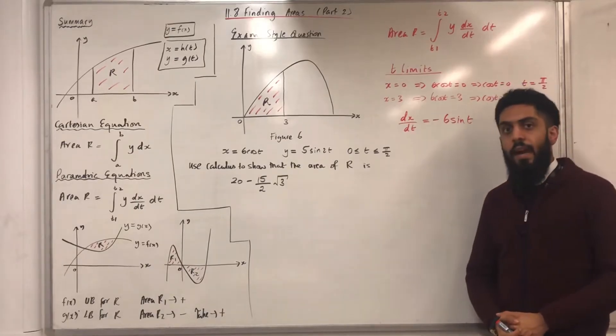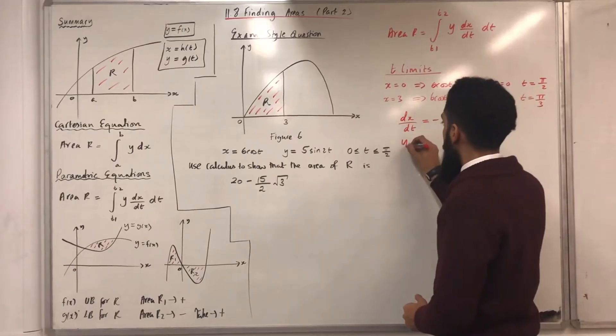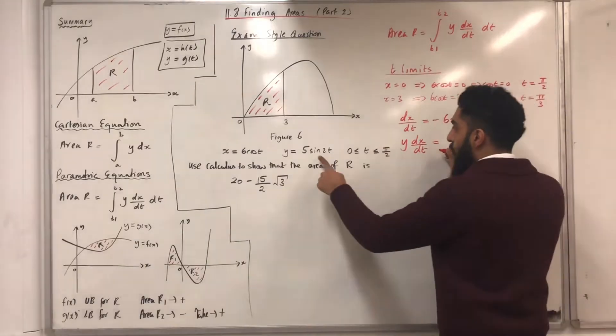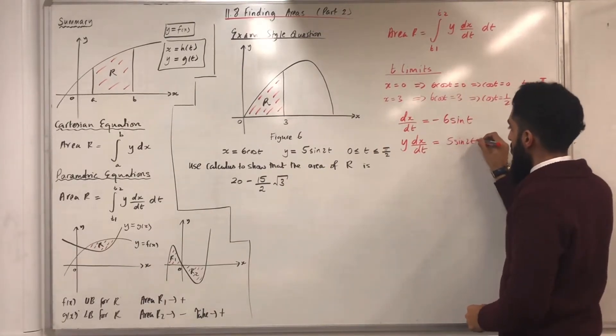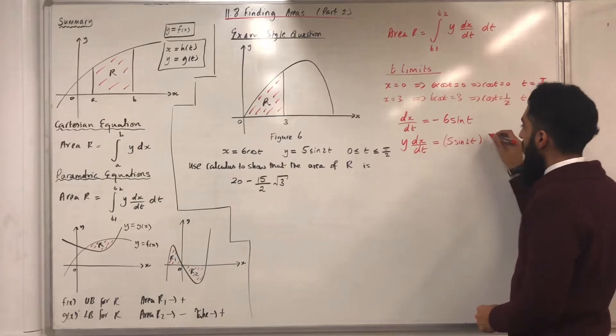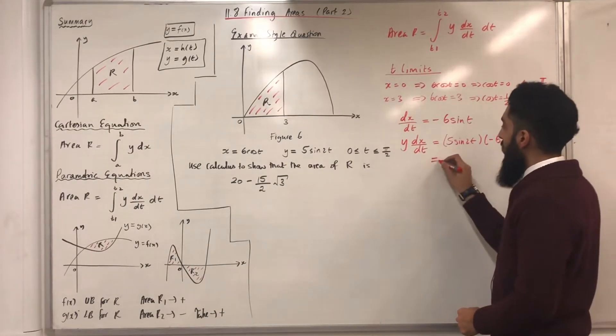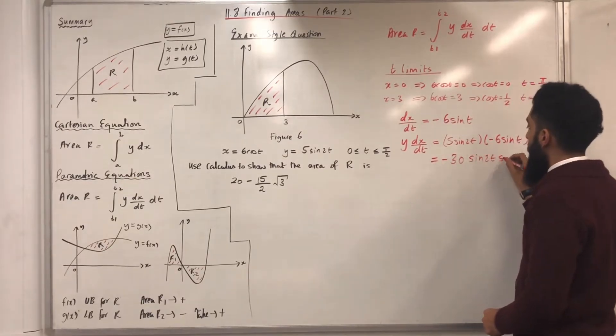Now, I'm going to find y multiplied by dx over dt. So, y dx over dt. I know that y is equal 5 sin 2t. I'm going to multiply this by minus 6 sin t to give me minus 30 sin 2t sin t.